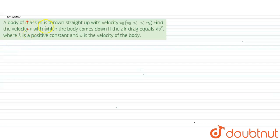Hello students. The question is: a body of mass m is thrown straight up with a velocity v naught. Find the velocity v with which the body comes down, if the air drag is equal to kv square, where k is a constant and v is the velocity of the body.